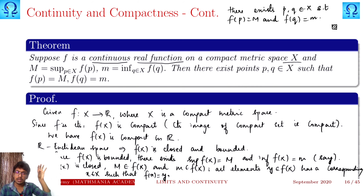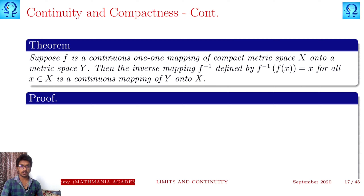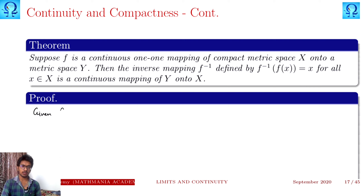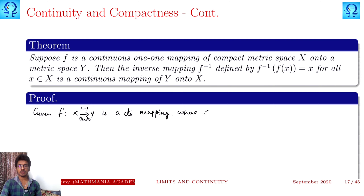Here, what we have made use of: the continuous image of a compact set is compact; a set is compact in a Euclidean metric space if and only if it is closed and bounded; if it is bounded there exist finite supremum and infimum; and since the set is closed, the supremum and infimum must be members of the set — those elements in X we name p and q.